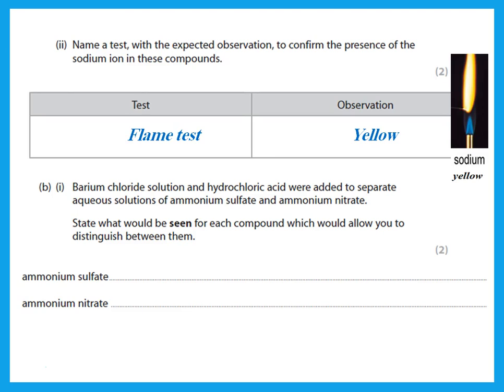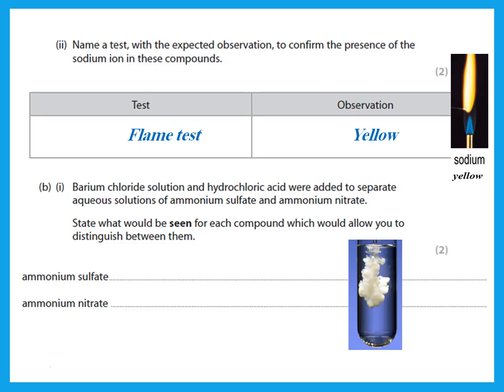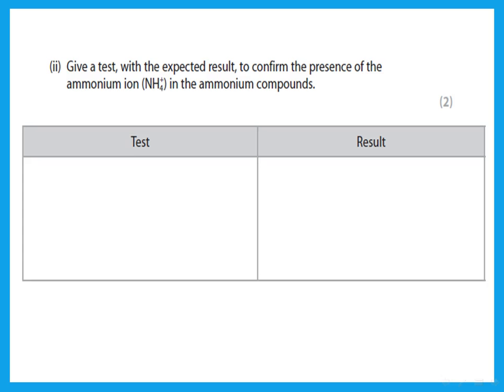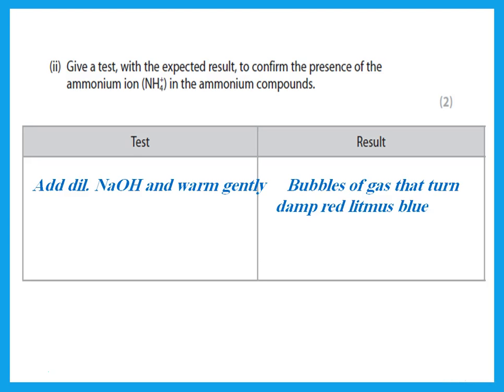Barium chloride solution and hydrochloric acid were added to separate solutions of ammonium sulfate and ammonium nitrate. Barium chloride is a test for sulfate. If added to ammonium sulfate, it gives a white precipitate, while ammonium nitrate — which has no sulfate — gives no change. Then he says: give a test with the expected result to confirm the presence of the ammonium ion. Add dilute sodium hydroxide and warm gently — you get bubbles of gas that turn damp red litmus to blue.